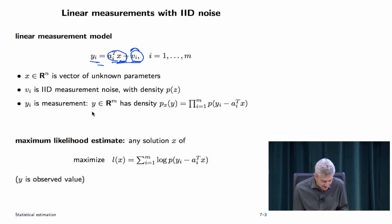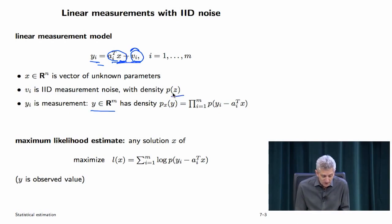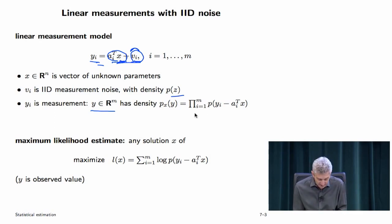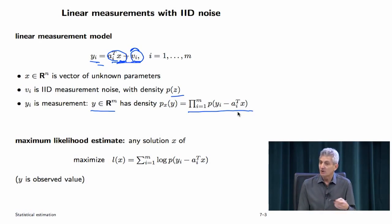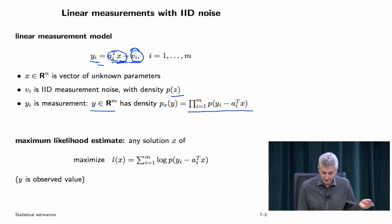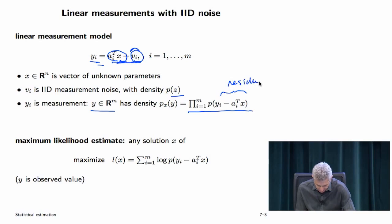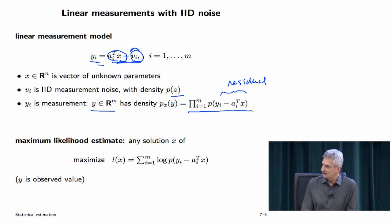Assuming the v_i are i.i.d. with some density p(z), if the parameter has value x, the density of y is the product of the densities evaluated at y_i minus a_i-transpose x — that's exactly v_i. You simply take the product of the densities because they're independent to get the density of the vector y. Other people would call y_i minus a_i-transpose x the residual, which here is nothing but the noise.